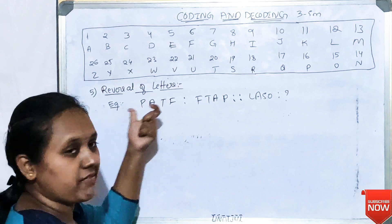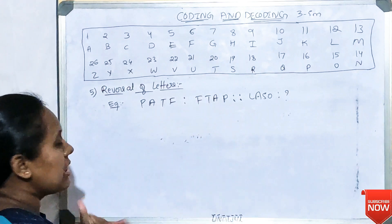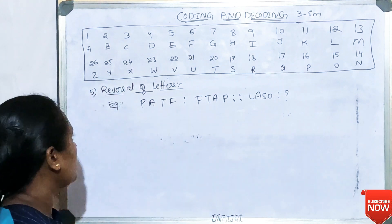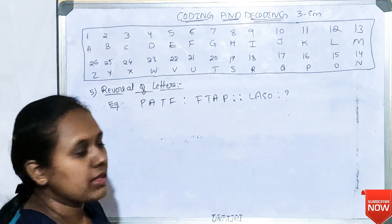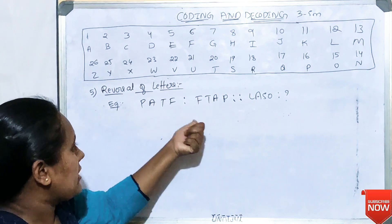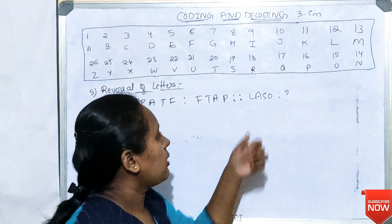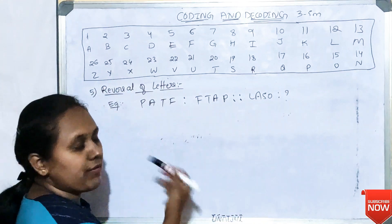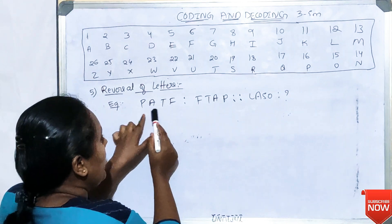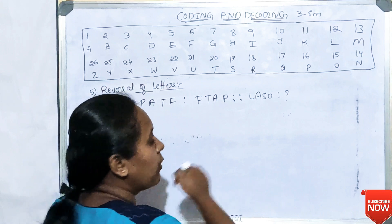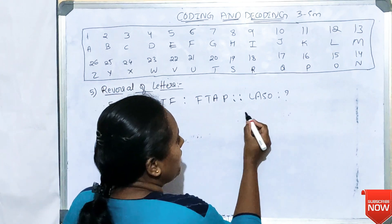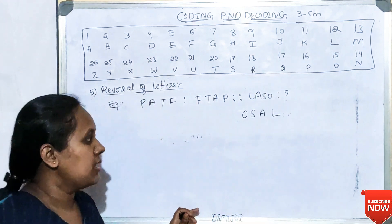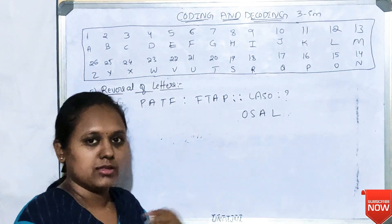The next type of pattern is reversal of letters — the letters are simply reversed to form the code. For example, PATAF is coded as FTAP. So what is the code for LASO? You just reverse it: LASO becomes OSAL. This type is very simple.